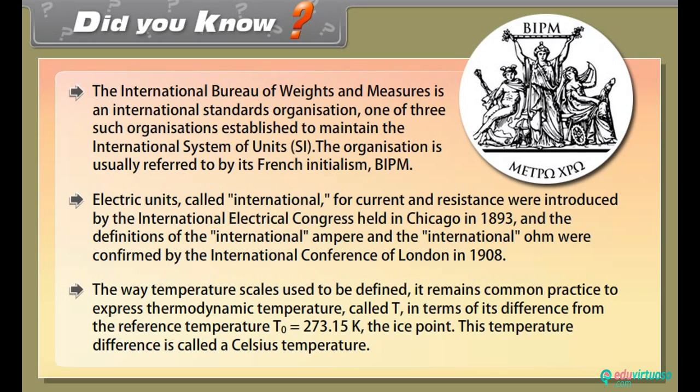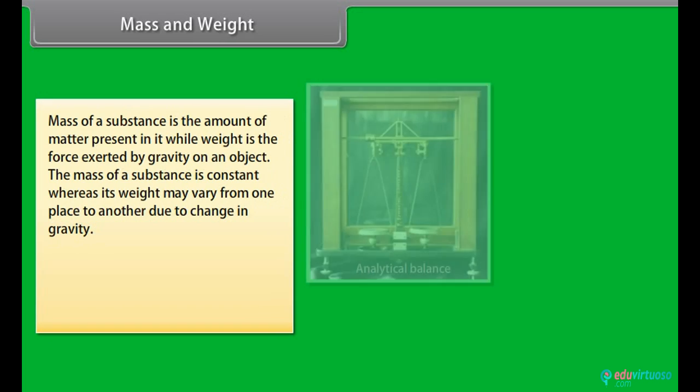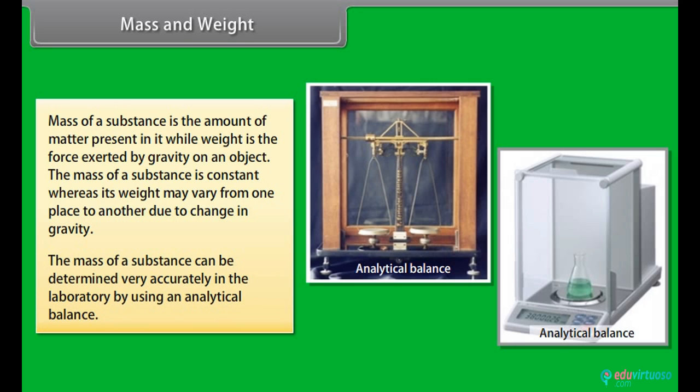Mass and weight. Mass is the quantity of matter present in it, while weight is the force exerted by gravity on an object. The mass of a substance is constant whereas its weight may vary from one place to another due to change in gravity. The mass of a substance can be determined very accurately in the laboratory by using an analytical balance.